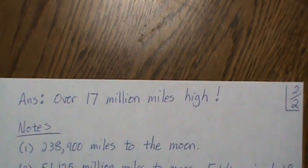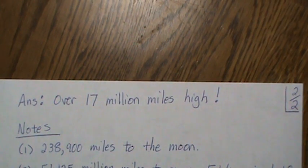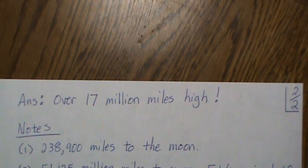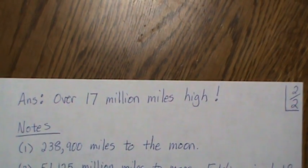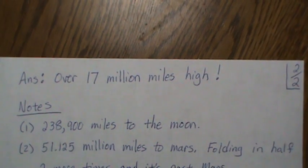Here are a few notes. The Earth to the Moon is only 238,900 miles, so this piece of paper that we folded in half 50 times is past the moon.